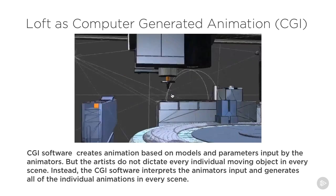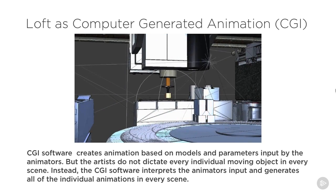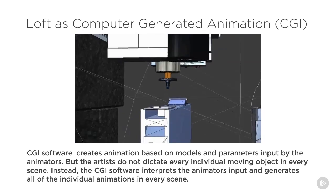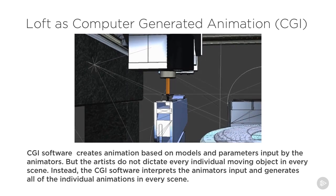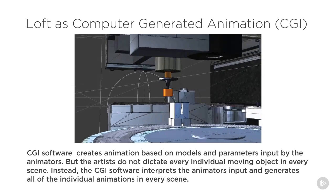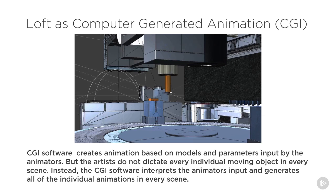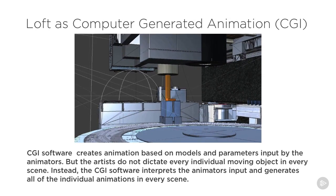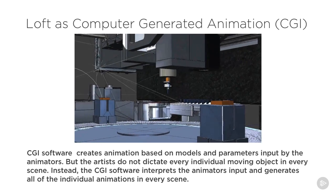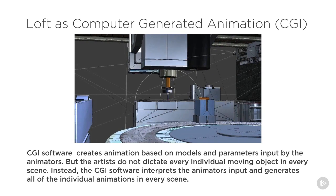When it comes to CGI software, it creates animation based on models and parameters input by the animators, but the artists do not dictate every individual moving object in every scene. Instead, the CGI software interprets the animators' input and generates all the individual animations. There isn't a single point where an animator is drawing any of the cells — they're all being created by the computer. That's why I think of it as like a loft: you're not controlling everything in the shape, you're directly controlling it at the sketches and guide rails, and influencing it with conditions, but you're not actually building every single bit of that loft.